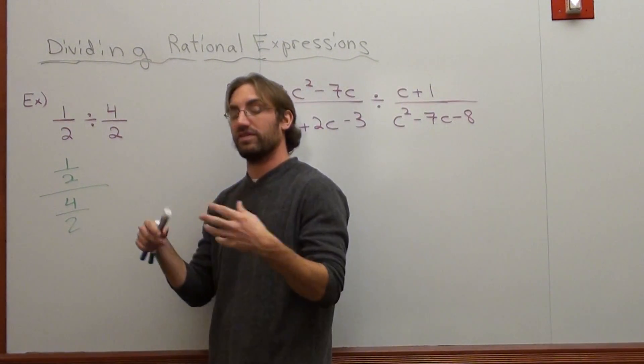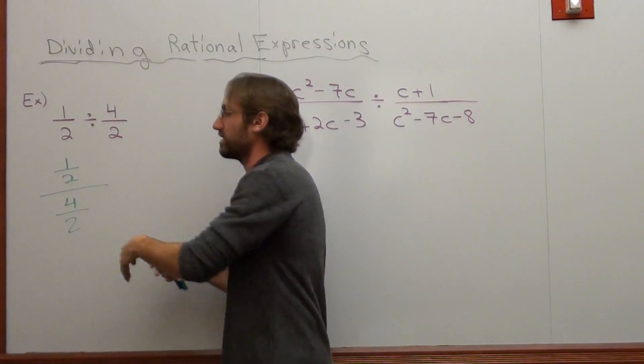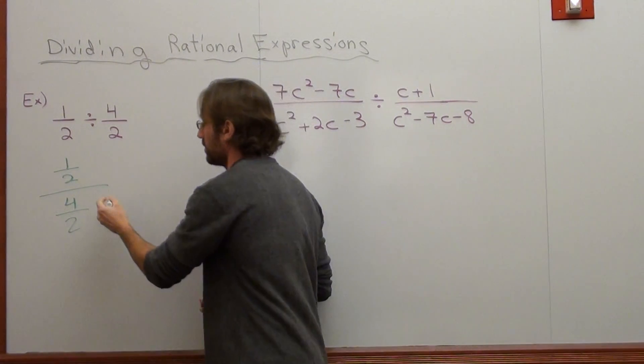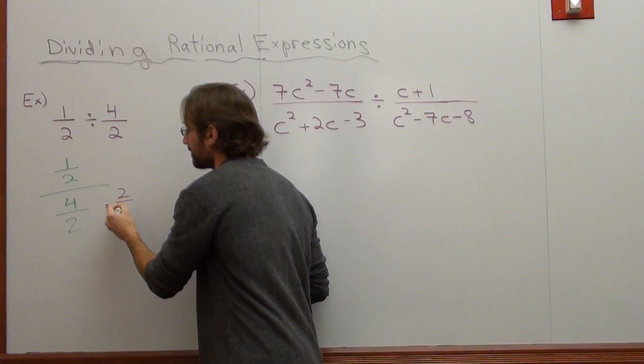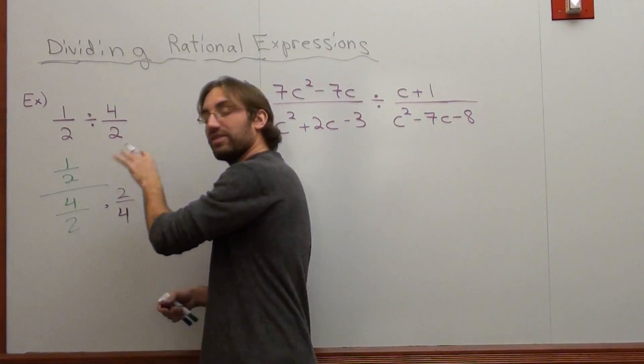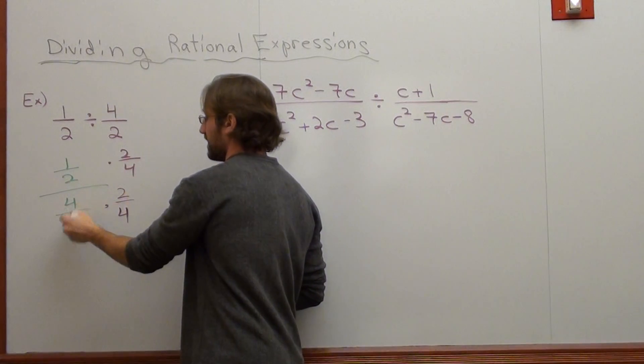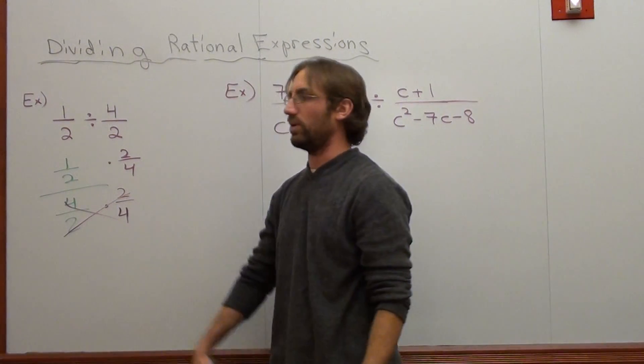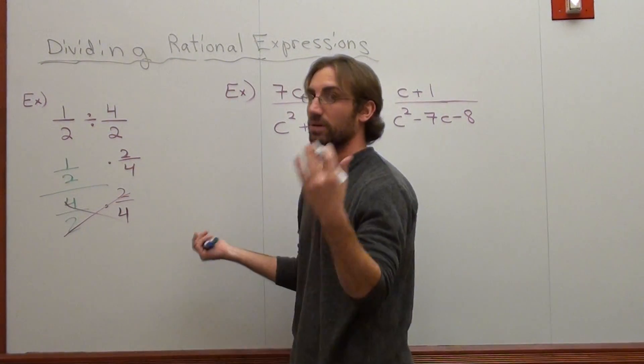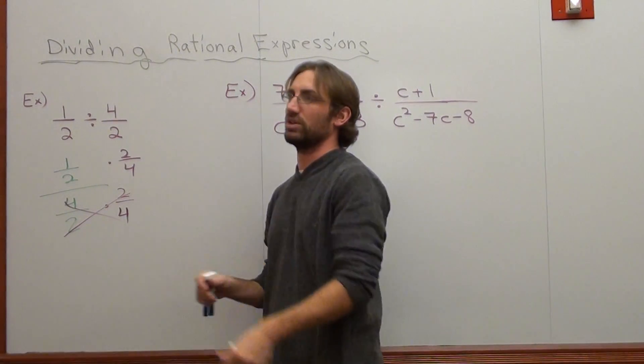So what I do in order to get rid of three denominators is I multiply by its reciprocal here. But what I do in the bottom of a fraction, I have to do in the top of a fraction. This basically becomes non-existent. It's over 1, but then it's trivial, because technically everything can be written over 1.